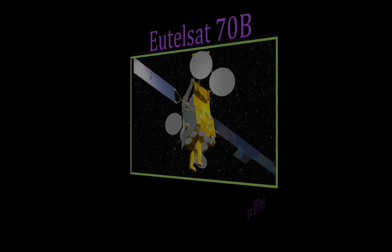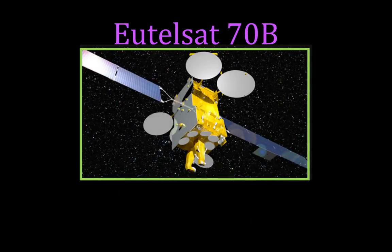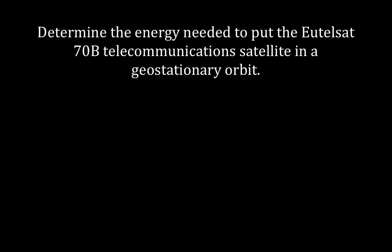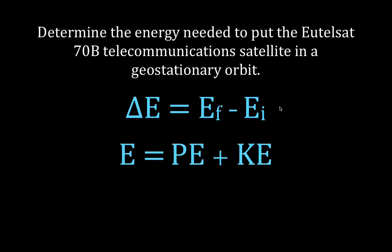Now, what we're going to do is determine — as we said earlier — the energy needed for this UTEL satellite 70b. This satellite was one of the last satellites launched in 2012 by Sea Launch, and we are going to determine the energy needed to put that UTEL satellite 70b, that telecommunication satellite, into geostationary orbit. In order to do that, we're going to determine the change in the energy, defined as the final energy minus the initial energy. The total mechanical energy is the sum of the potential and the kinetic energy, so we calculate both for the final and initial states, then find the difference.